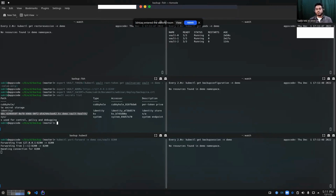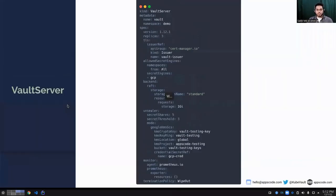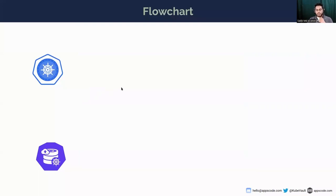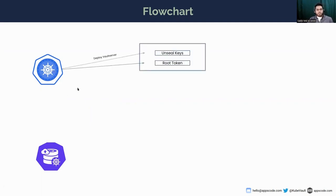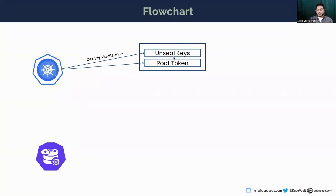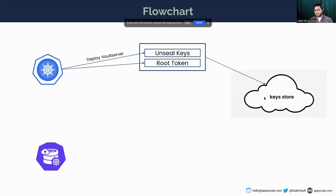We've successfully deployed our vault server. Now we're going to write some data into our vault server, get a backup of that data, and then check some restore scenarios. Let's look at the workflow that happens when we deploy vault. I have the Stash enterprise operator and KV Vault already deployed. Whenever we deploy a vault server, it comes up with a set of unseal keys and root tokens - and these are unique to this particular vault server. No other vault server has this same identity.